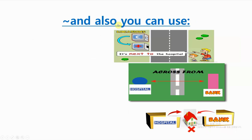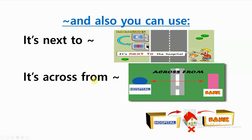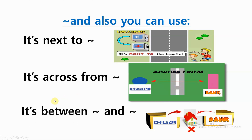For a detailed final destination, you can use 'it's next to.' Here we have: it's next to the hospital — the bank is next to the hospital. It's across from: the bank is across from the hospital. It's between the bank and the hospital, meaning it's in the middle of those two places.